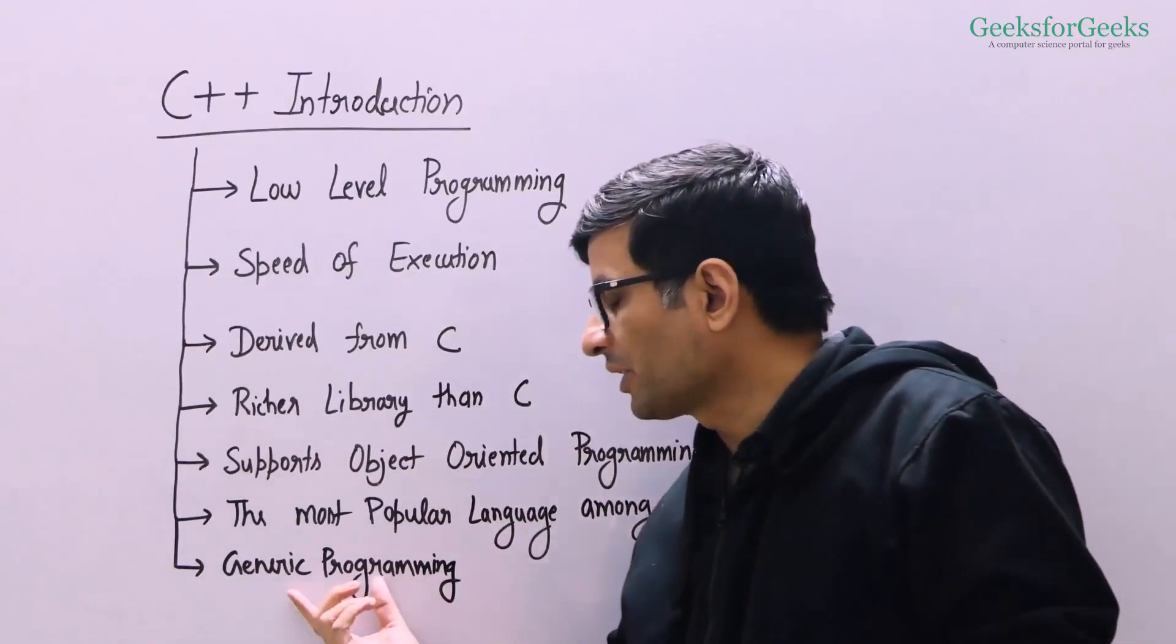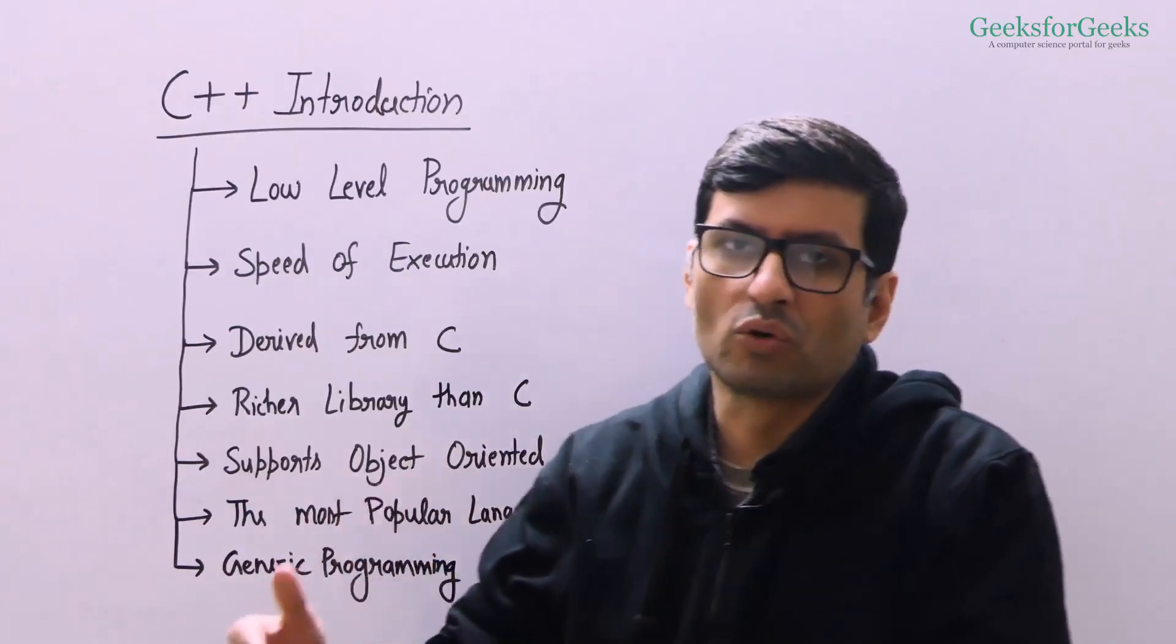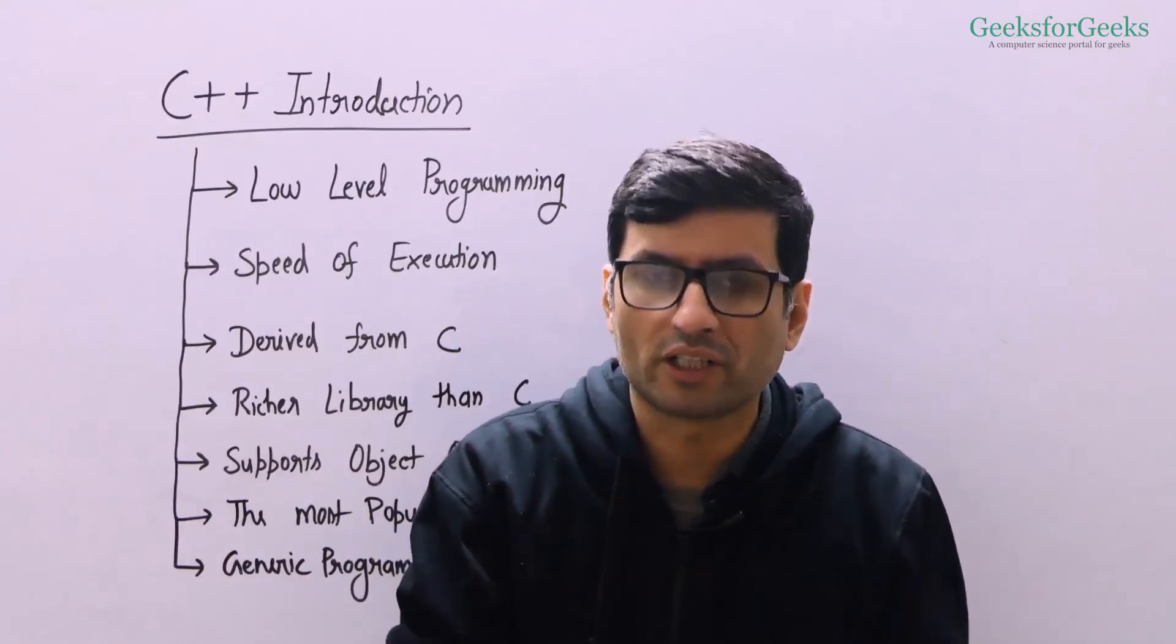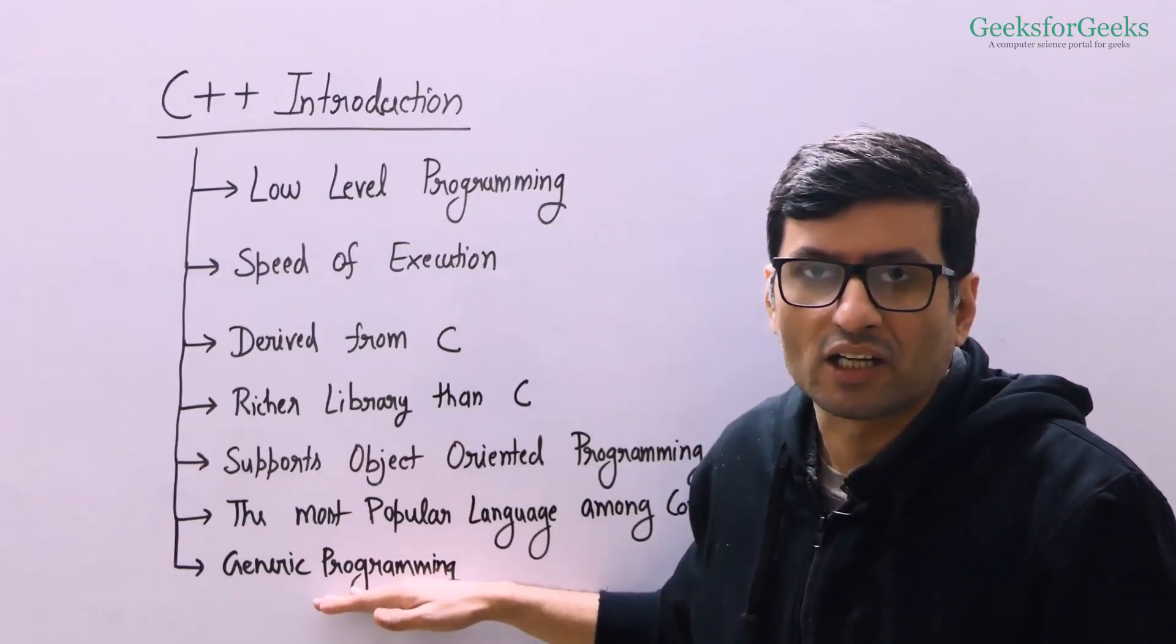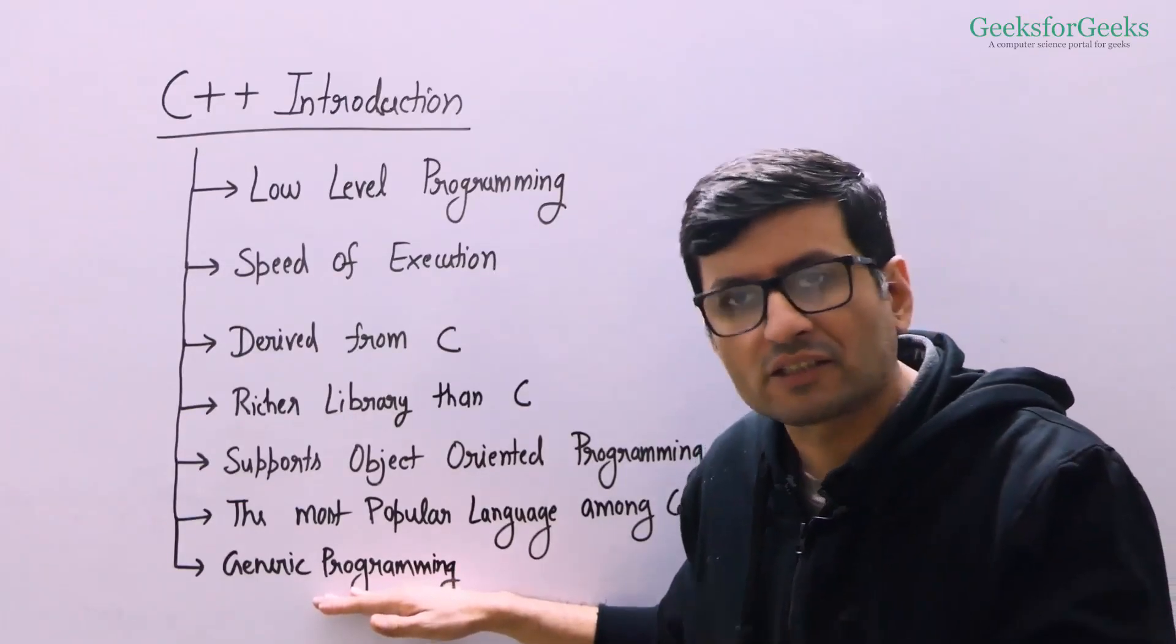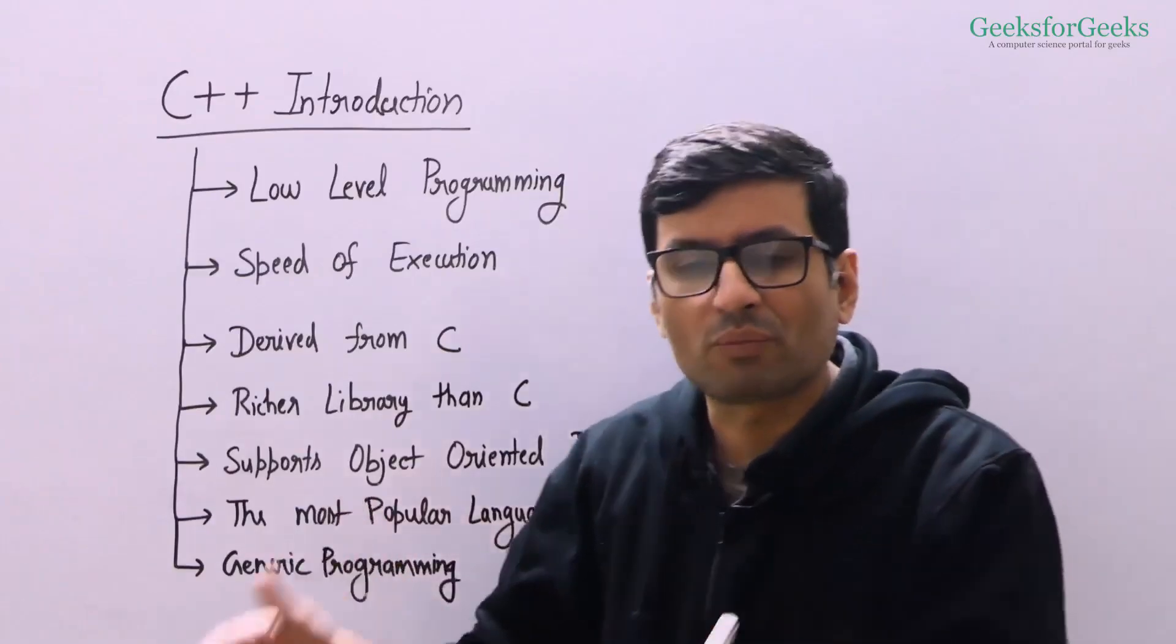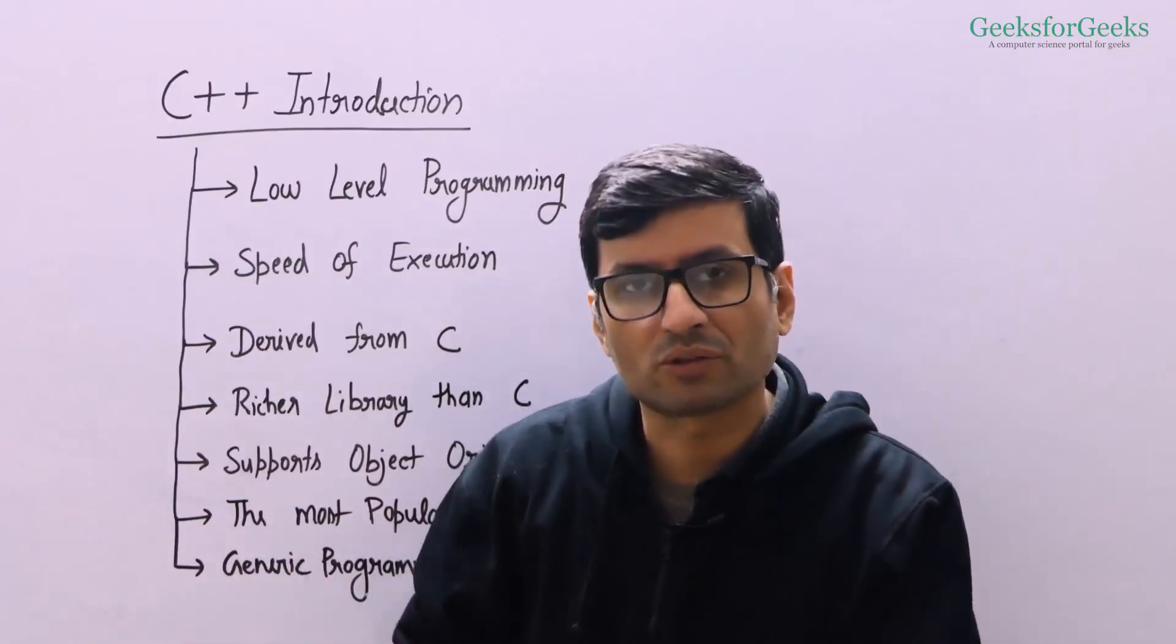The features, for example generic programming. You can design one code and you can use it for multiple types. C++ has a feature called templates that allows you to do generic programming. Generics is also there in Java but being an old programming language, C++ also has it.